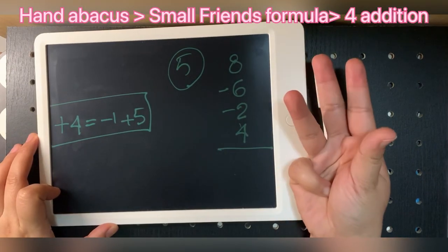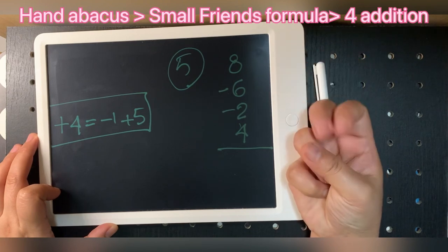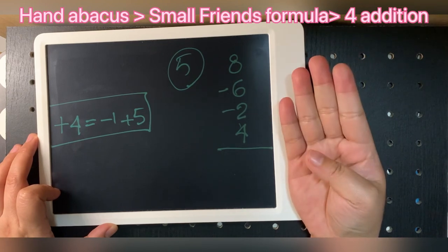Number five: eight, minus six, minus two, four. Answer is four.